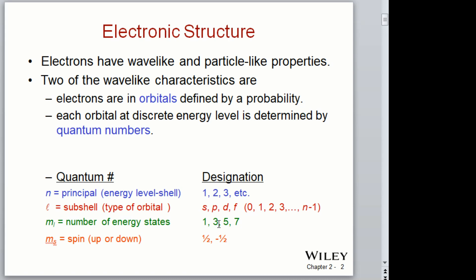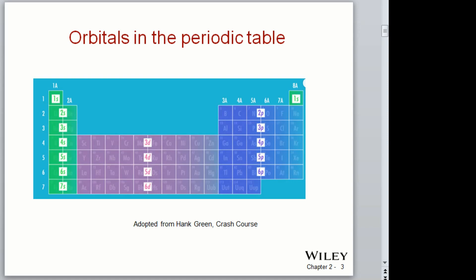A p orbital has three energy states, and if each energy state has two electrons — one spin up and one spin down — then you have three times two, or six electrons in the orbital. How about d? The d subshell has five energy states, and each energy state can have up to two electrons, so a filled d state would have five times two, or ten total electrons.